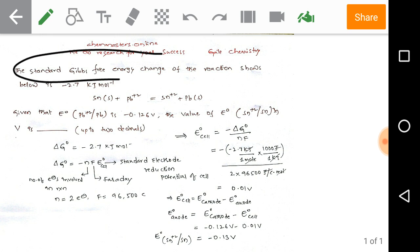The standard Gibbs free energy change of the reaction shown below is minus 2.7 kilojoules per mole. The reaction is tin solid plus Pb²⁺ equals Sn²⁺ plus Pb solid.